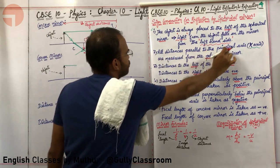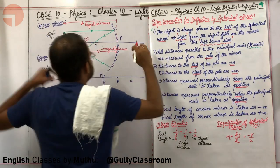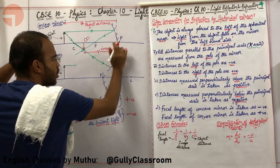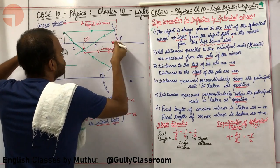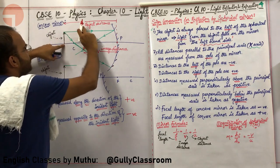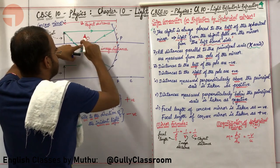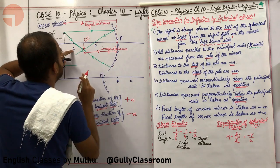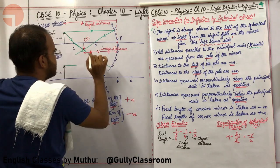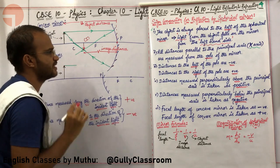All distances parallel to the principal axis — which is considered the X-axis — are measured from the pole. From the pole, where is my object? That is U, the object distance. From the pole, where is my image? That distance is V, the image distance.